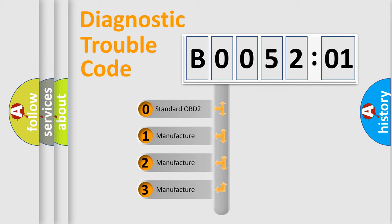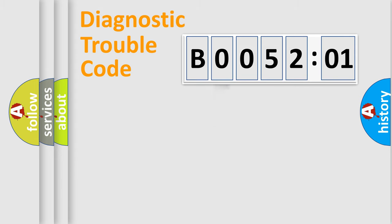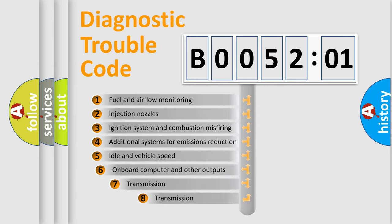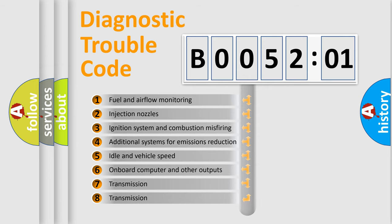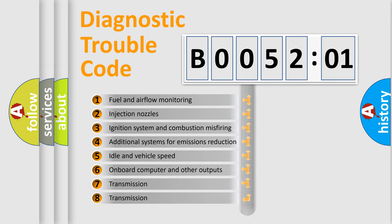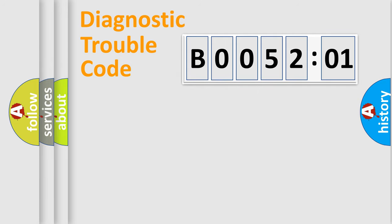If the second character is expressed as zero, it is a standardized error. In the case of numbers 1, 2, or 3, it is a manufacturer-specific error. The third character specifies a subset of errors. The distribution shown is valid only for the standardized DTC code. Only the last two characters define the specific fault of the group.